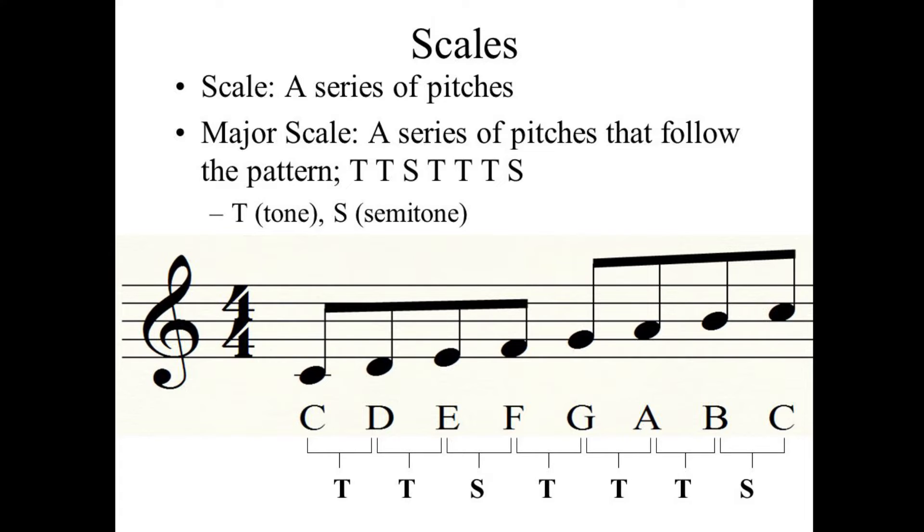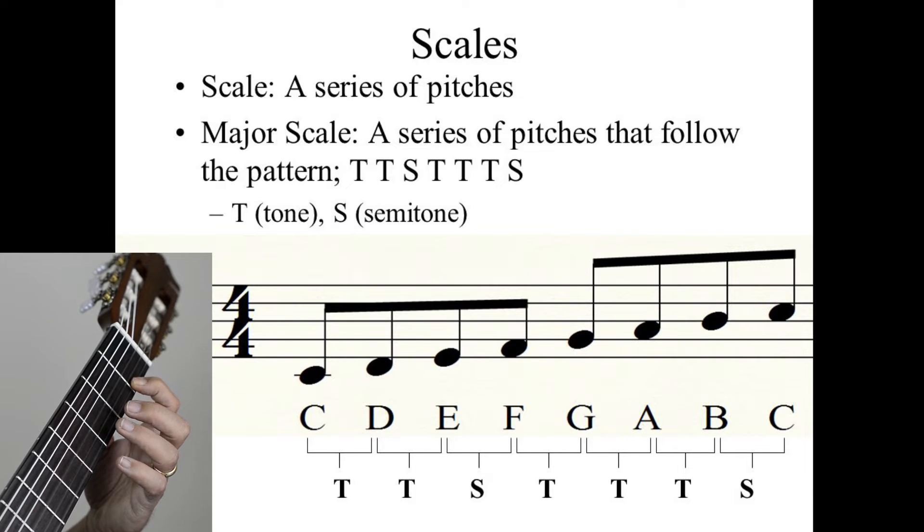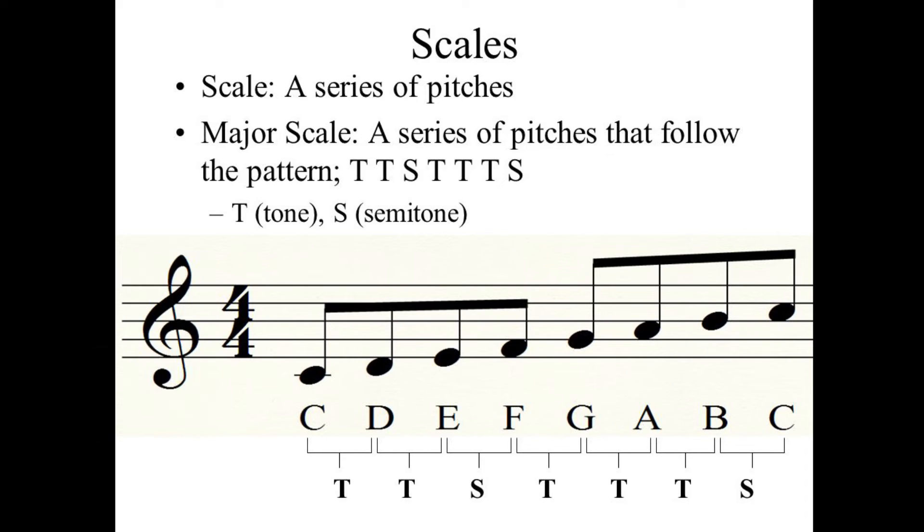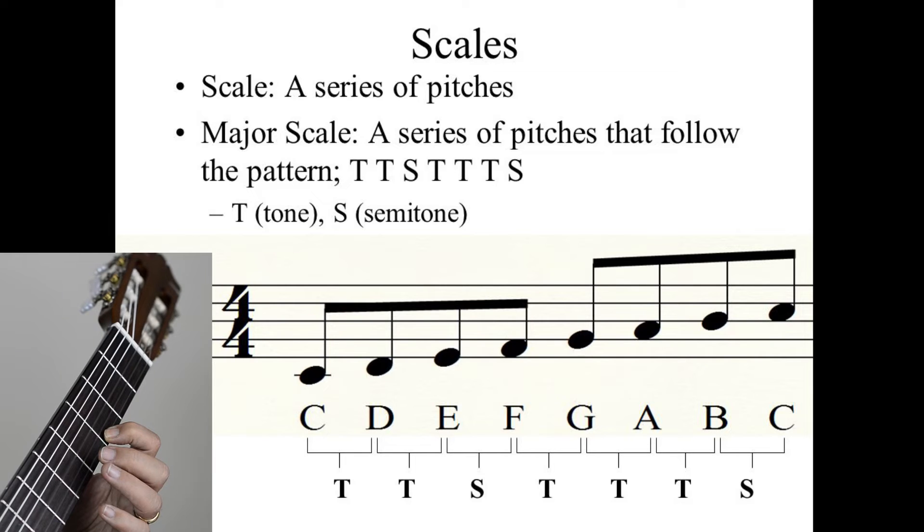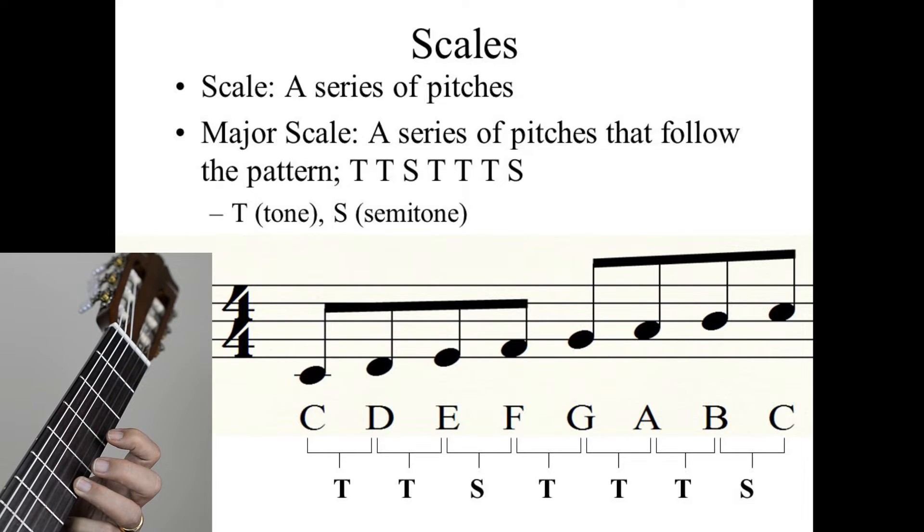A tone consists of two semitones, so it's double the semitone. If you're holding the guitar on fret number 1, the tone will be on fret number 3. And if you hold fret number 3, a tone will be on fret number 5.